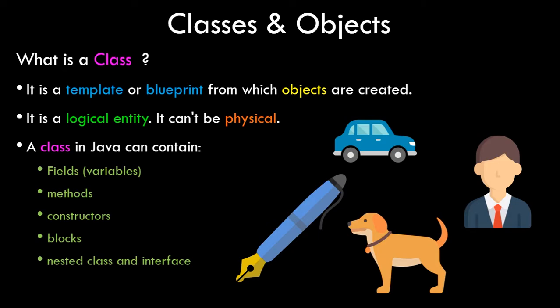So what exactly is a class? Theoretically, a class is a template or a blueprint from which objects are created. It is basically a logical entity and it cannot be physical. By logical entity I mean it does not have any memory allocation when your program is running — the memory allocation is actually done to the object and not the class.